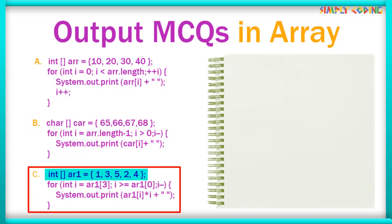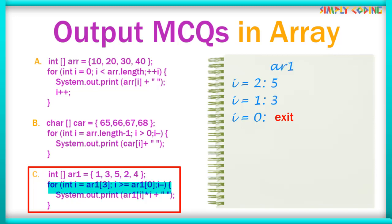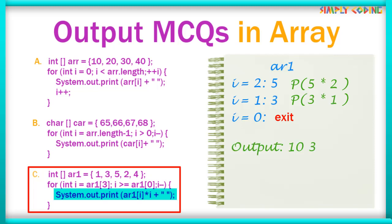In the next question we have an int array of five elements. To get the loop's start and end values we read array elements. The element at index 3 is 2 and the element at index 0 is 1. So the loop runs twice with index values 2 and 1. Inside the loop it is printing arr1[i] multiplied by i. So first it prints 5 × 2 = 10, then space, then 3 × 1 = 3.